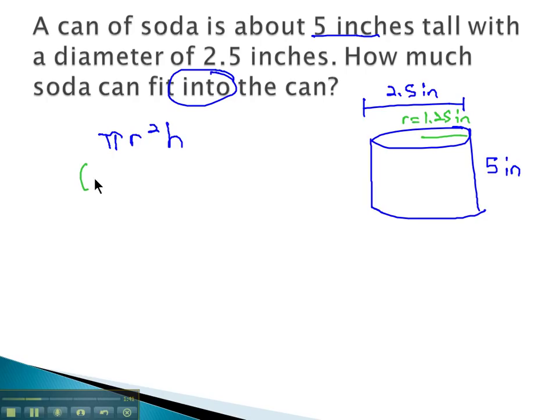So plugging this in, pi is 3.14 times r. The radius is 1.25 inches squared times the height. That's how tall the can is, 5 inches.